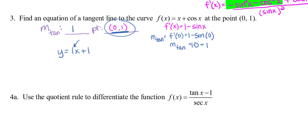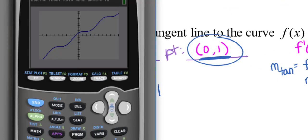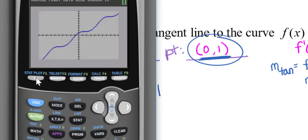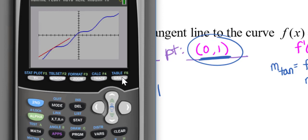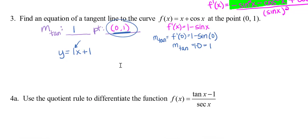Now let's check this graphically and make sure this makes sense. If I go to y2 and put in x plus 1, graph that. At the point (0, 1), that is in fact looking like it is a tangent line. So there's my equation of my tangent line.